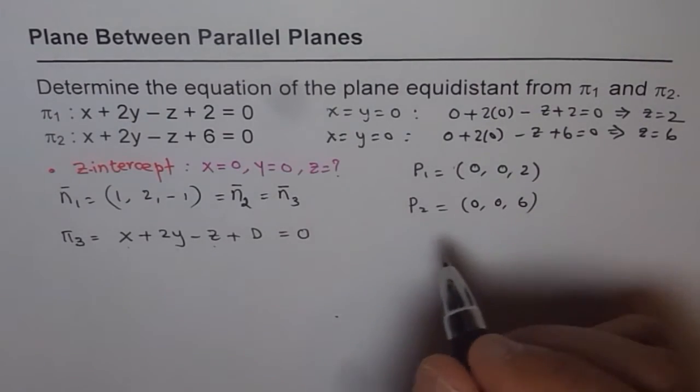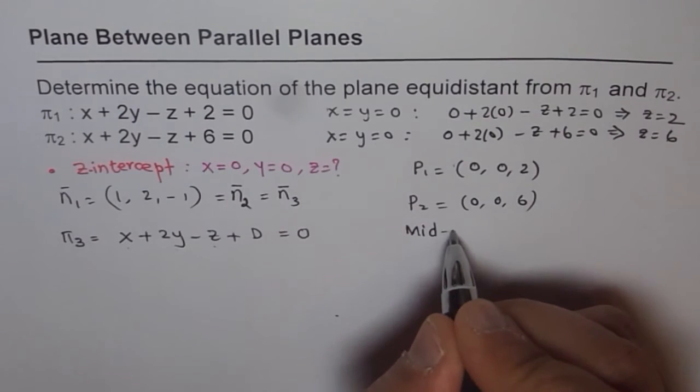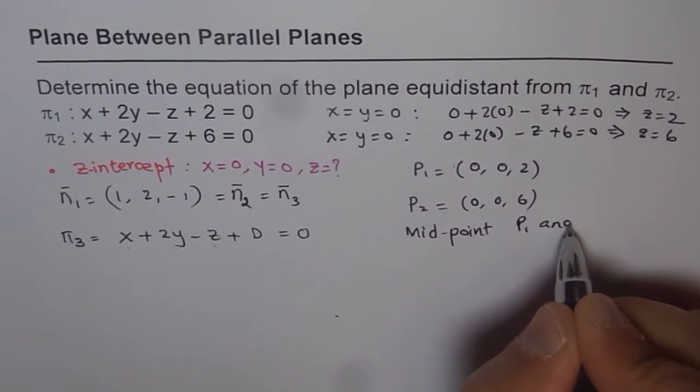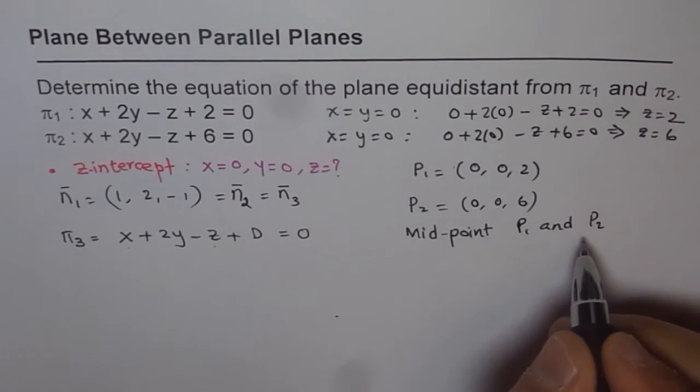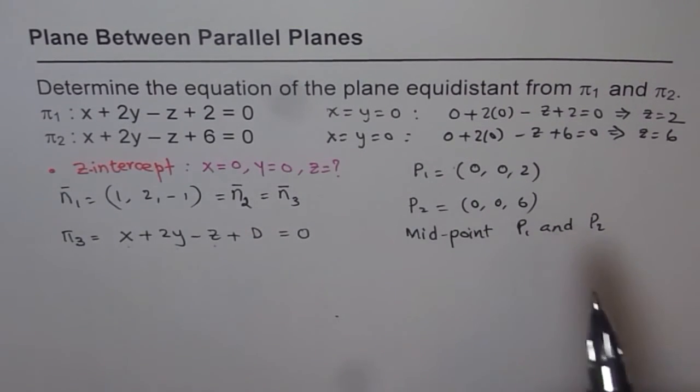So what we can do now is find a midpoint between the two. So what is the midpoint of P1 and P2? Now, that midpoint should lie on a plane π3 which is equidistant from both the planes. That is the concept.